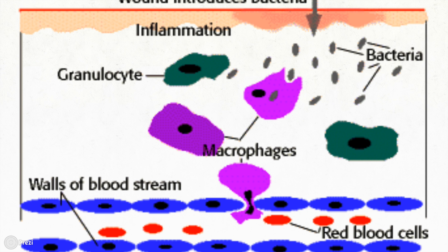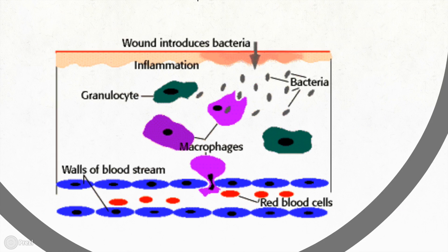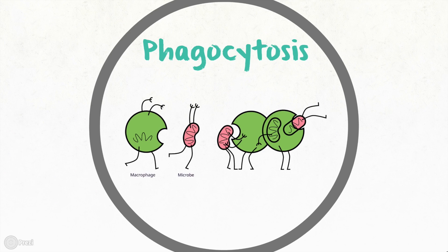Cells such as macrophages and neutrophils initiate a process known as phagocytosis. Once a foreign particle is detected, phagocytosis means that these cells will eat the pathogen and digest it with their enzymes.